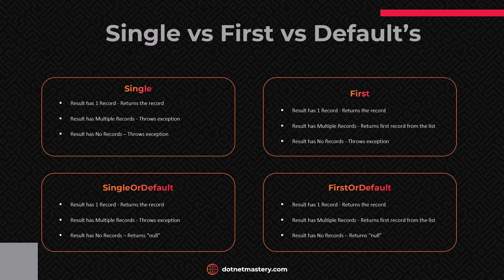You might be wondering about performance differences between SingleOrDefault and FirstOrDefault. FirstOrDefault usually performs faster because when using First or FirstOrDefault, it iterates the collection only until it finds the first match and then returns immediately. Whereas with Single or SingleOrDefault, it iterates through the entire collection to verify there is only one match. This applies when you are using LINQ on an existing collection. So typically, FirstOrDefault should be your go-to approach unless your business scenario requires otherwise.